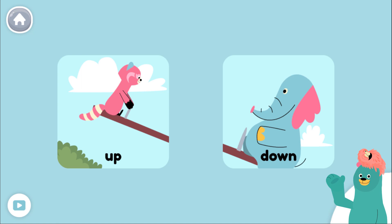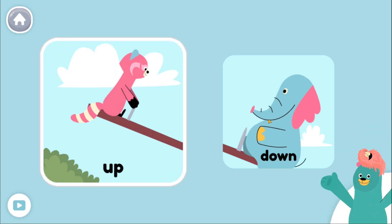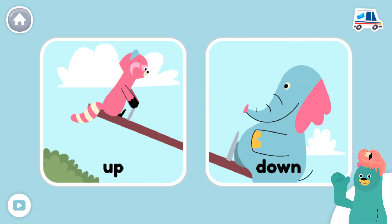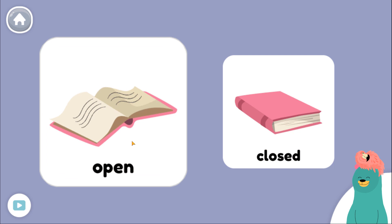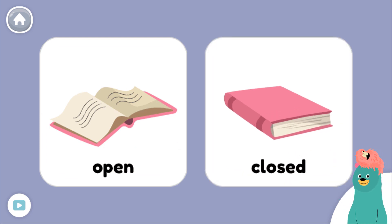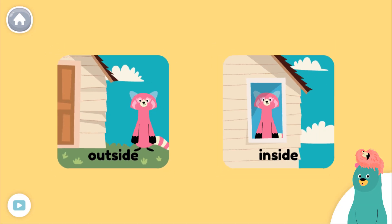Raya is up, not down. Tap both pictures: up, down. Good work! If a book is open, it is not closed. Tap both pictures: open, closed. Great!